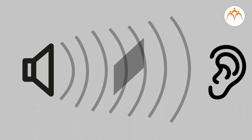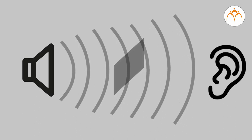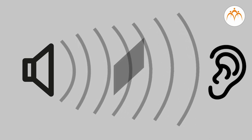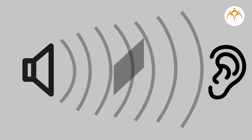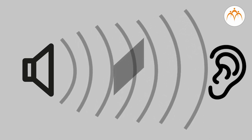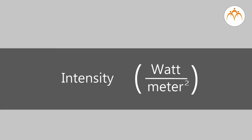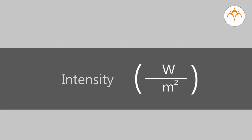Intensity of vibrations is proportional to the square of amplitude. The amount of sound energy transported past a given area of the medium per unit of time is known as the intensity of the sound wave. Intensity of the sound wave is expressed in watts per meter squared.